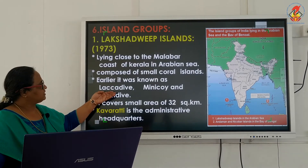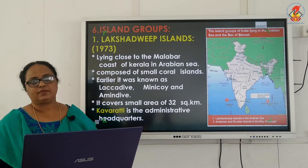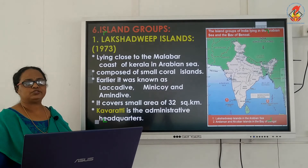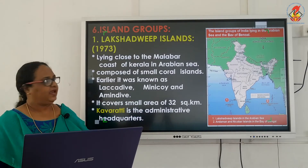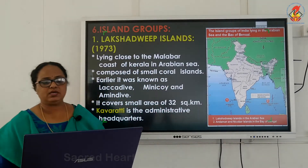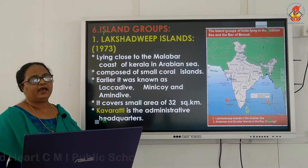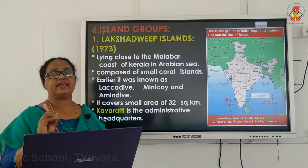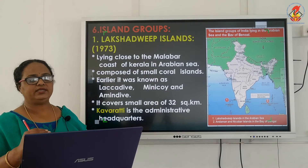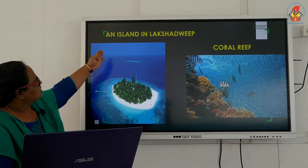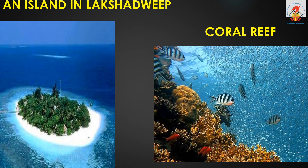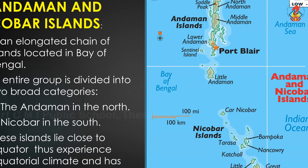Lakshadweep was earlier known as Lakshadweep, Minikoi, and Amindivi. It covers an area of 32 square kilometers, and its administrative headquarters is Kavaratti. The islands are known for beautiful coral reefs and scenic landscapes.